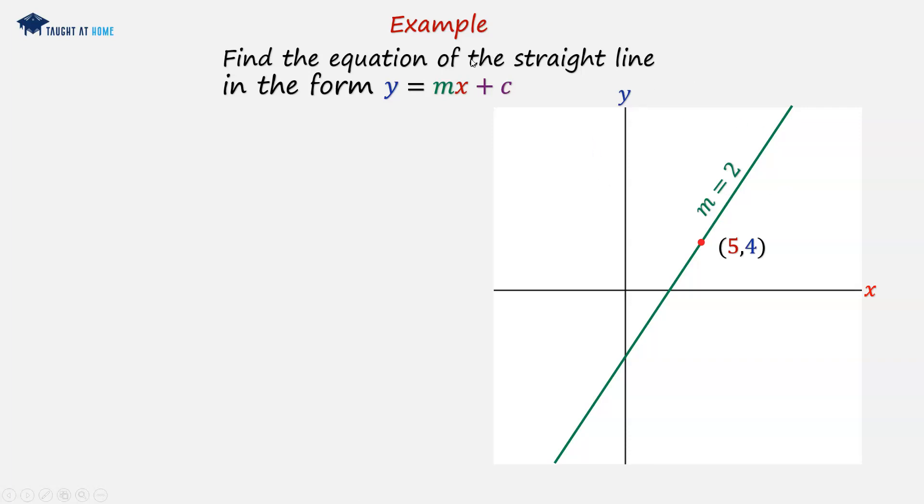So in this instance, we'd recognize that we would use the alternate form of the straight line equation, y minus b equals mx minus a, because we can substitute into this equation, rearrange it to then be in this form here. So let's go ahead and do that.